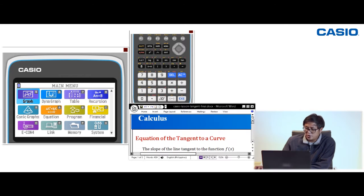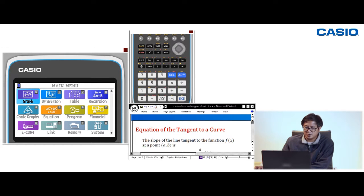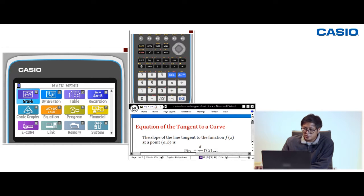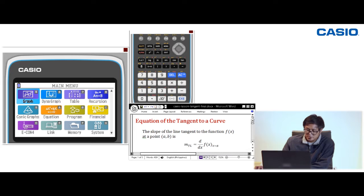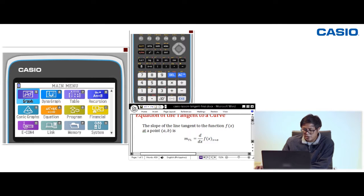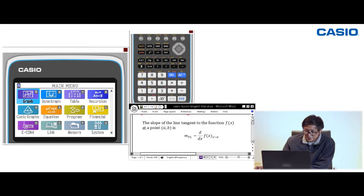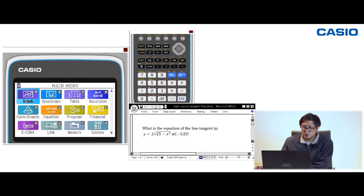Let's have this topic: the equation of the tangent to a curve. We all know that the slope of the line tangent to a function f(x) at a given point (a, b) is given by this expression. Let's solve this problem: What is the equation of the line tangent to y = 2√(25 - x²) at the point (-3, 8)?